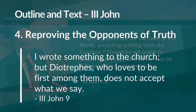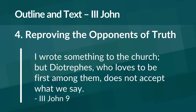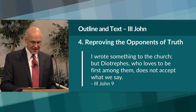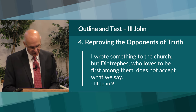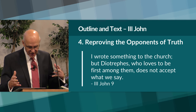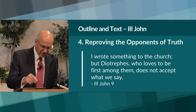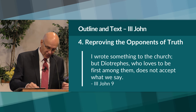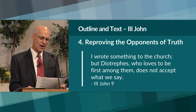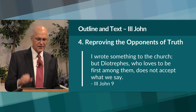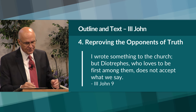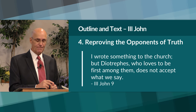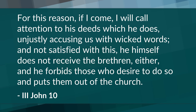He moves on to the problem at hand — reproving the opponents of the truth. In verse 9 he says, 'I wrote something to the church, but Diotrephes, who loves to be first among them, does not accept what we say.' John has sent a previous letter; some scholars think he is referring to an instruction to receive certain missionaries from John which Diotrephes refuses to read to the church and refuses to honor. Diotrephes was blocking communication between John and the church in an attempt to challenge John's authority.